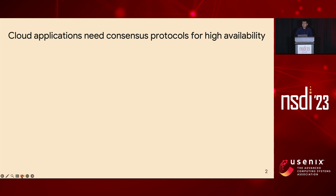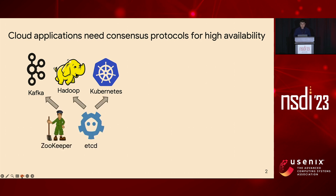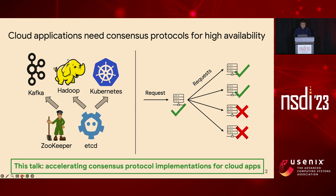Cloud applications need distributed consensus protocols for high availability. For example, Apache Kafka, Hadoop, and Kubernetes use consensus protocols provided by ZooKeeper to tolerate machine failures. Basically, when one request comes, it will get broadcasted and executed on multiple machines, such that when some machines fail, other machines can still provide services. In this talk, we will specifically look at how to accelerate consensus protocol implementations for these cloud applications.